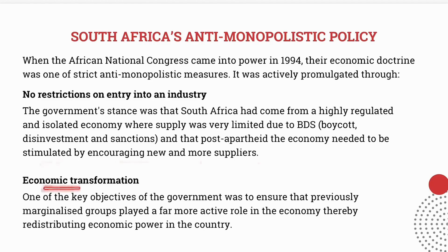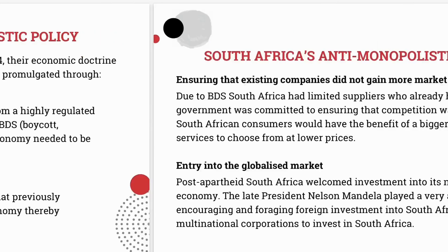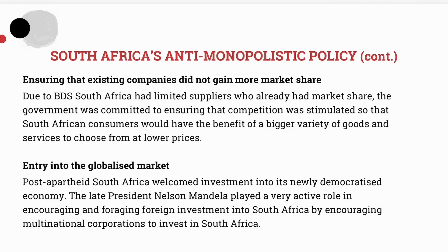The next objective was economic transformation. A key objective of the newly elected government in 1994 was to ensure that previously marginalized groups played a far more active role in the economy, thereby redistributing economic power within the country. Due to apartheid-era restrictions, South Africa had limited suppliers within the economy. The government wanted to stimulate competition so that South Africans could have a bigger variety of goods and services to choose from at lower prices.